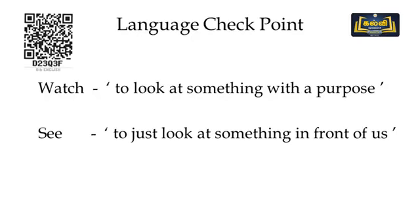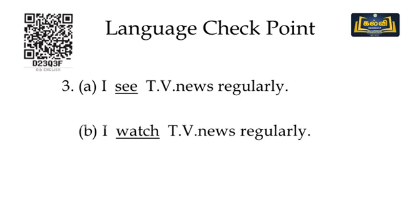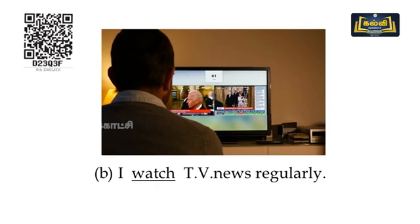Third: see and watch. 'See' is to notice something without a specific purpose. 'Watch' is to look at something with your purpose and attention. Example: I see a yellow car outside. I watch the sunrise. Students, can you find the correct sentence? I watch TV news regularly — 'watch' is correct because watching TV news is done with purpose.